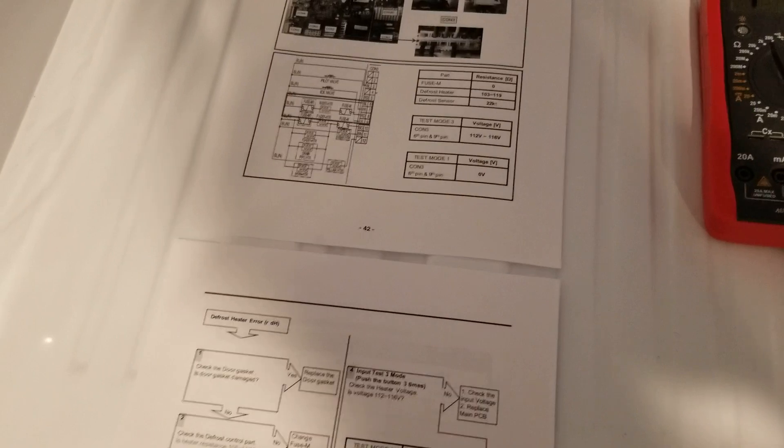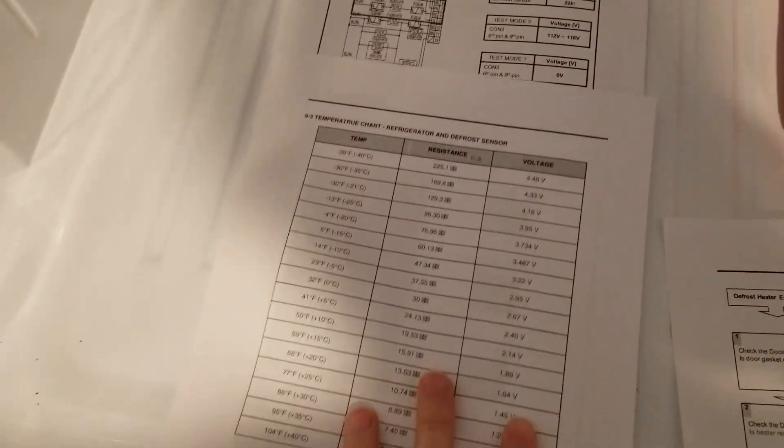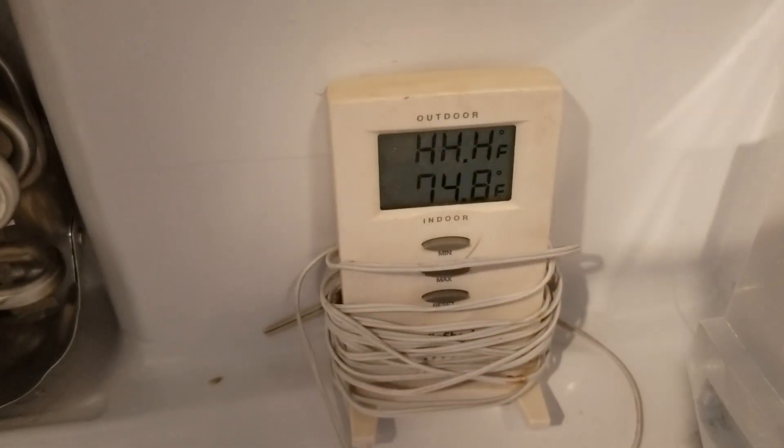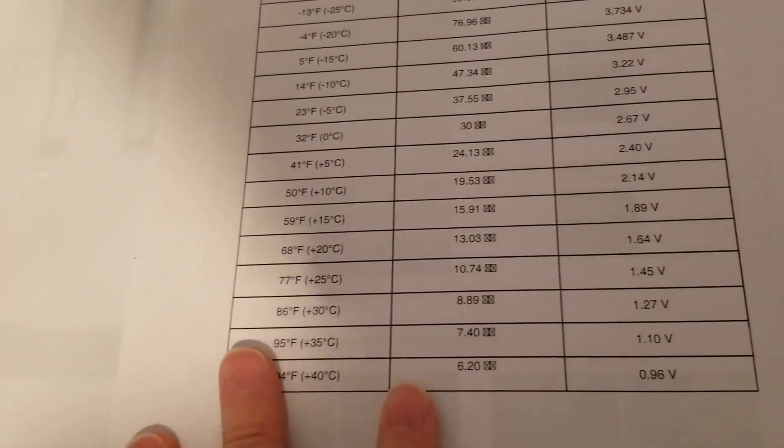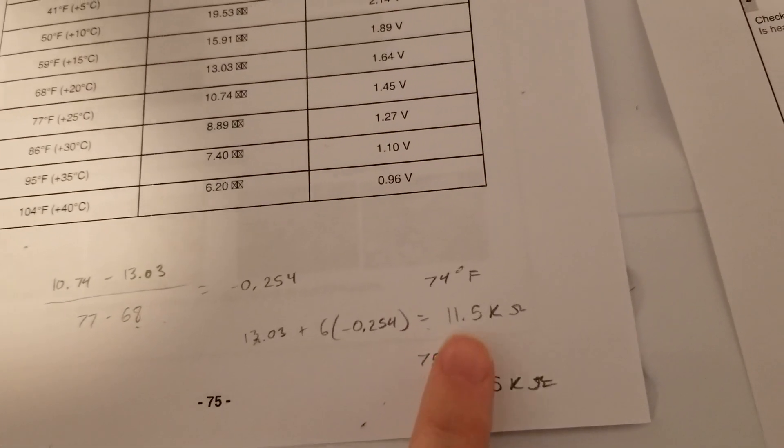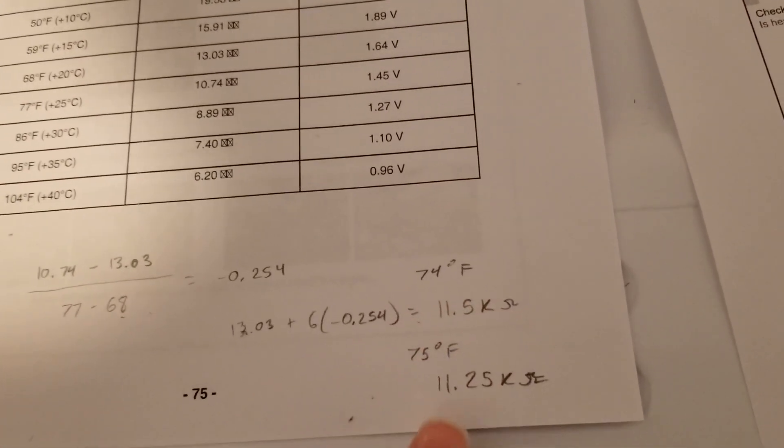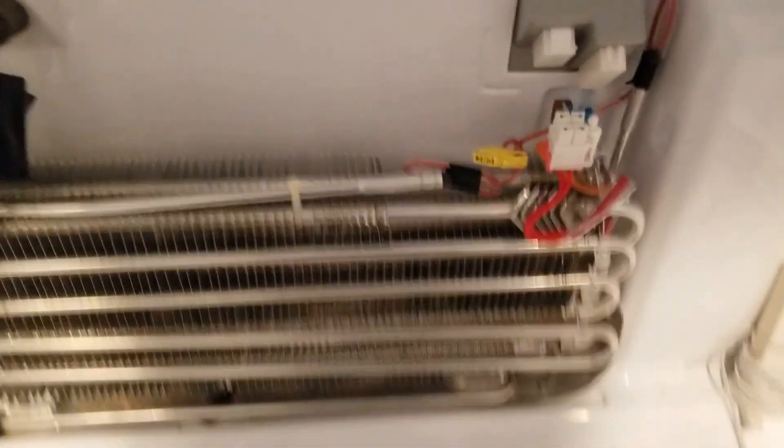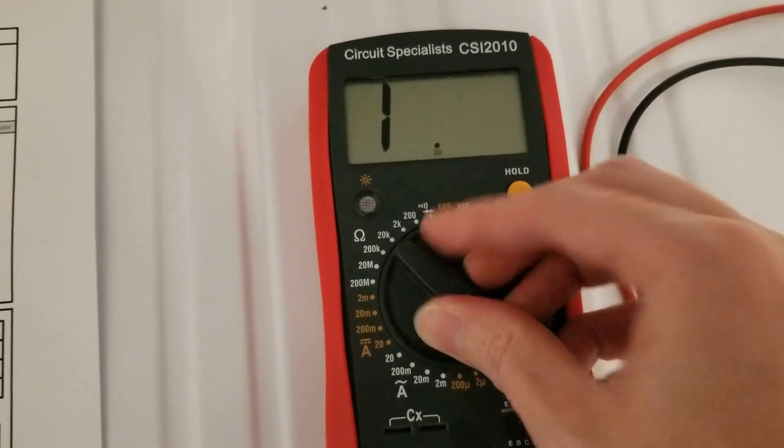Last one is the sensor. I have the table from the repair manual here. I have about 74.8 degrees Fahrenheit. I don't have 74 on the table, so I did some math. At 74 it should be about 11.5 kilo ohms, at 75 it should be about 11.25 kilo ohms. So I'll set this to about 20k as my max.